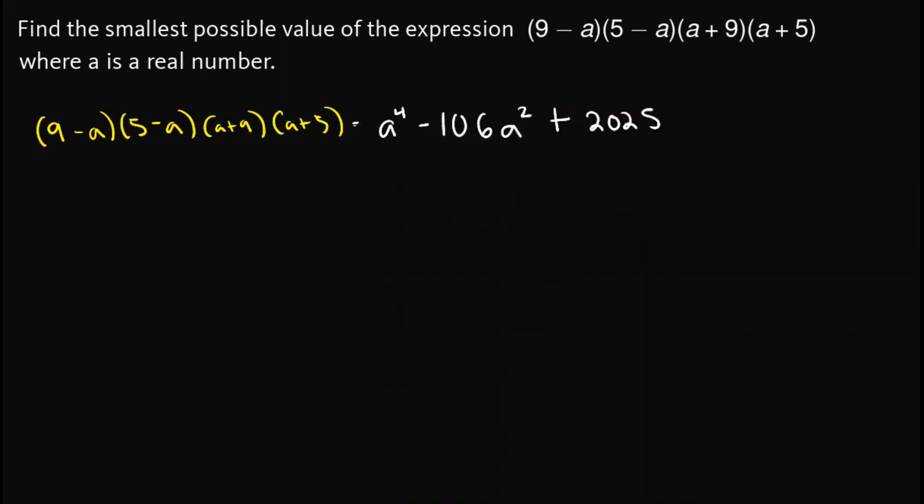Now here, we can let x equal a squared. So our expression would become, observe that we can write this one as a squared squared minus 106a squared plus 2,025. So the expression would become in terms of x: x squared minus 106x plus 2,025.